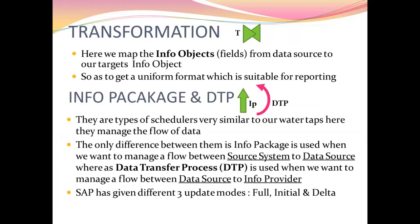Transformation: here we map the info objects from the data source to our target info object. In BW, fields are known as info objects. As mentioned earlier, we are trying to get a uniform format suitable for reporting, since the data in our data source is of different formats.